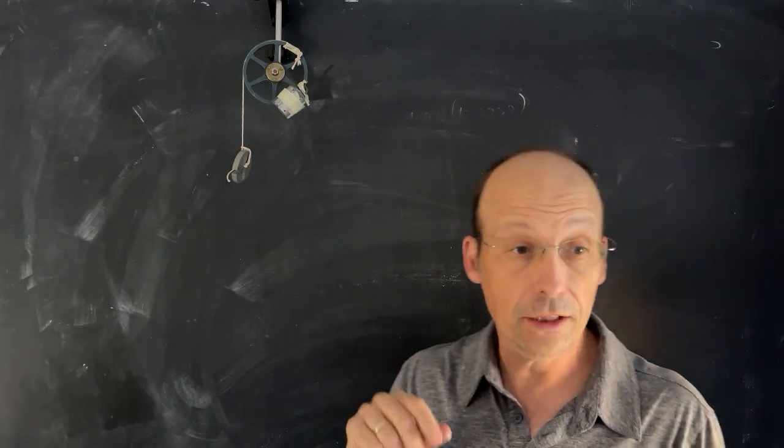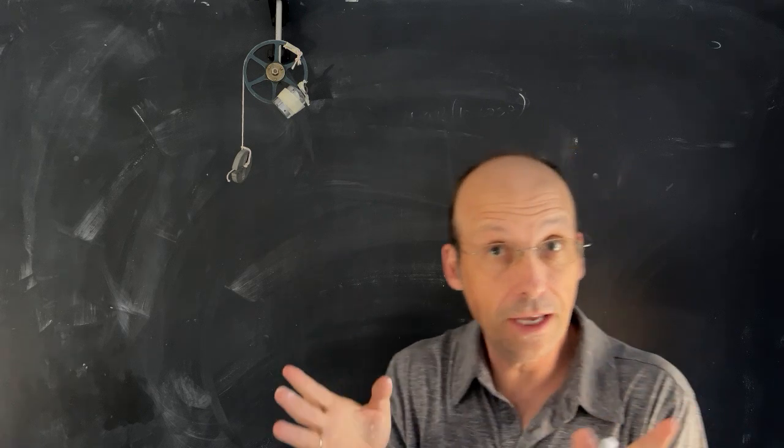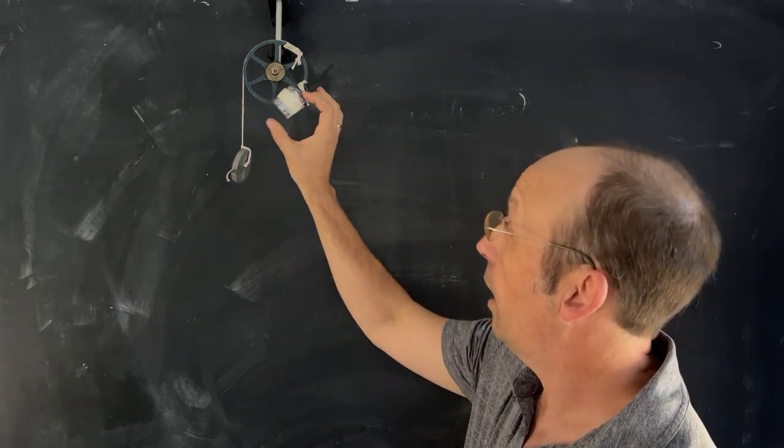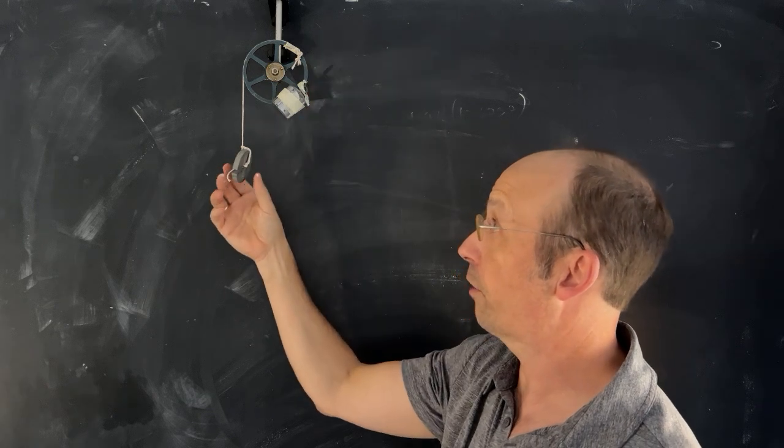So I found this example in the Taylor Mechanics book and I want to go over this. Here I have, and I made it in real life, look at that. So here I have a 200 gram mass on this pulley and then a string connected to a 100 gram mass.